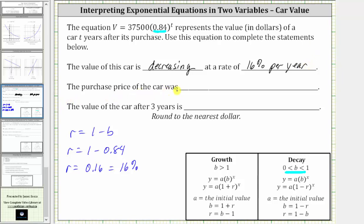Next, the purchase price of the car was what? Remember when we have an exponential equation in the form y equals a times b raised to the power of x, A is the initial or starting value, which is the y value when x is zero. Notice in our equation, a is equal to 37,500, which means the purchase price of the car was $37,500.